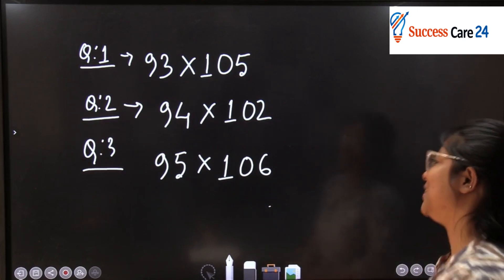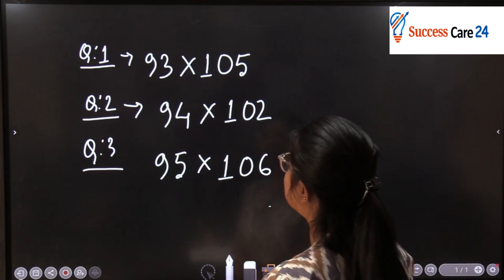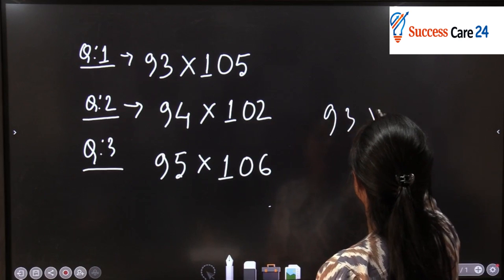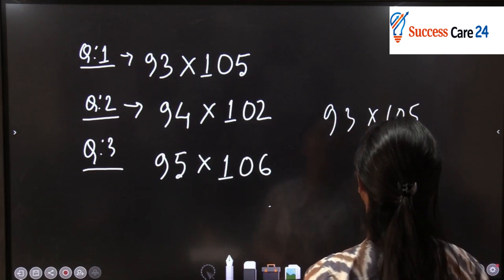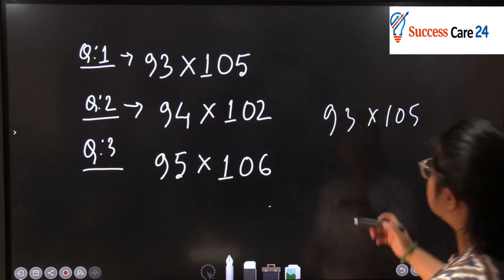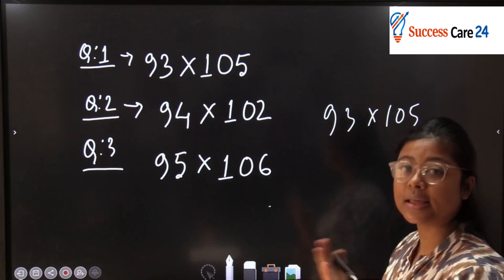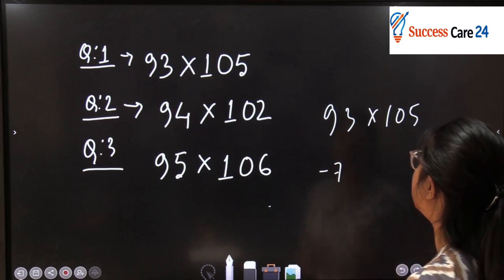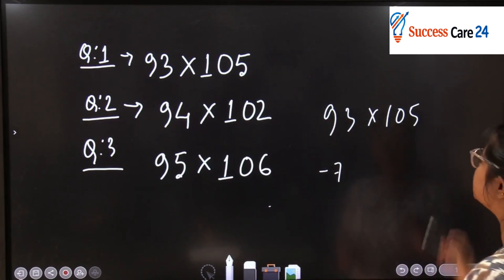So here you are asked to find 93 into 105. You have to multiply 93 into 105. What you need to do? Just take 93 from 100, it's not coming to 100, so 93 is 7 less than 100, so minus 7.